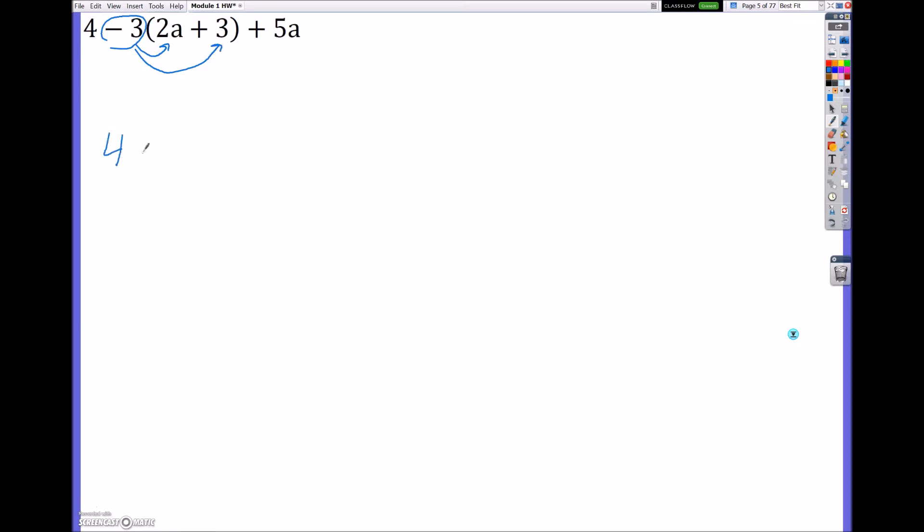So right here I have a negative 3, and I want to distribute that to the 2a and to the 3. So I'm going to have 4 minus 6a, I got that by doing negative 3 times 2a, and I'm going to have negative 3 times positive 3, which is a negative 9, plus 5a. And now what you want to realize is you're going to combine the variables with the variables and you're going to combine constants with the constants. This next step you don't necessarily need to do, but I like just organizing my thoughts and writing them in order. So it's going to be 4 minus 9 minus 6a plus 5a.